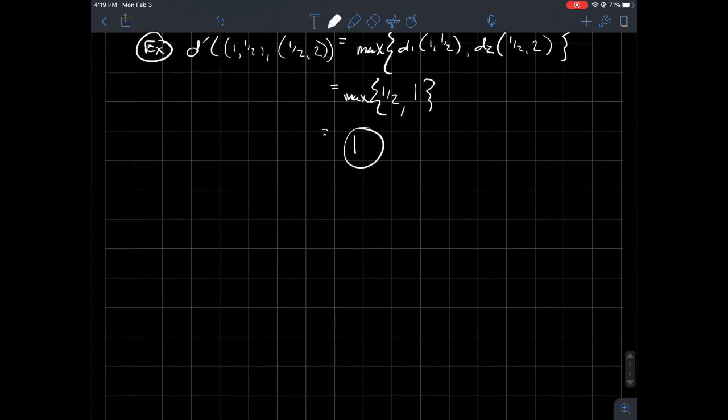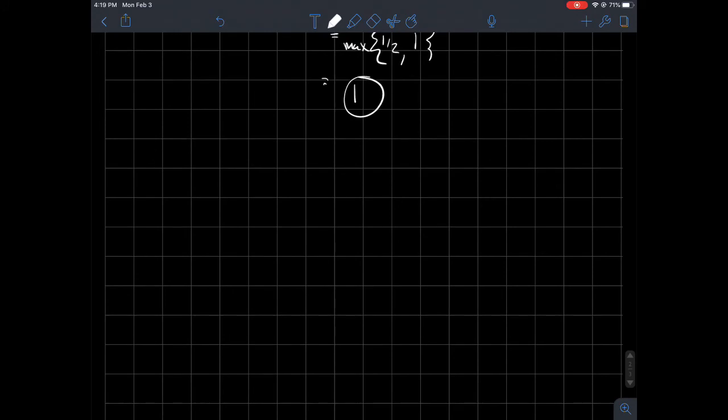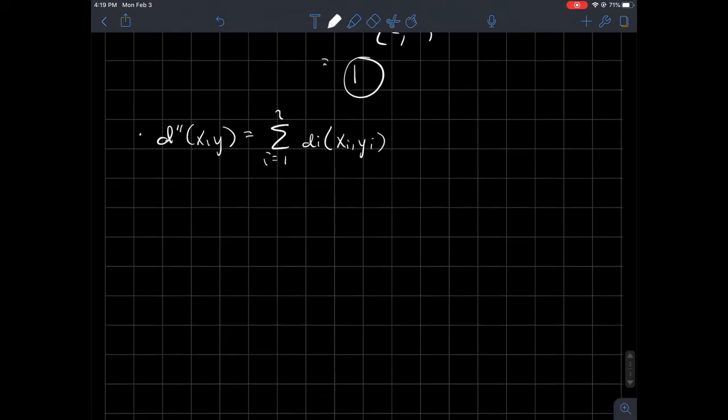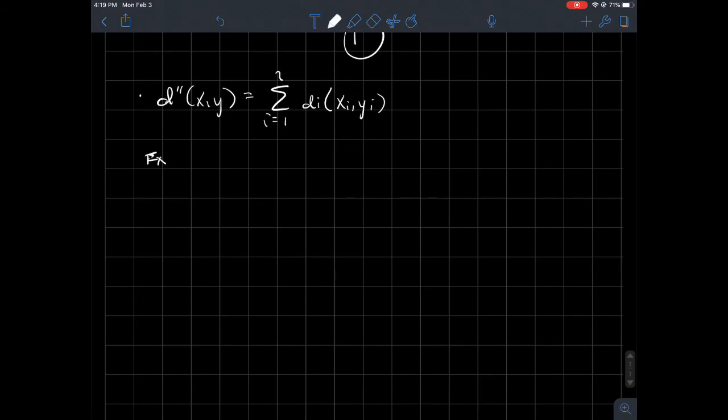The last metric that I'll tell you about that is possible, another possible metric I mean to say that we could put on a product space, we'll call it D double prime. So D double prime of X, Y, what we'll do is we will just sum the individual distances on each component. So from I equals one to two. And again, if you had like three components in your product, you'd have a three there and you'd have three things you're adding together. So to give you an example here, same kind of thing, D double prime of, let's do my same numbers: one, one half comma one half, two.